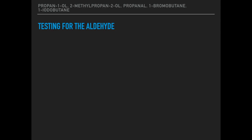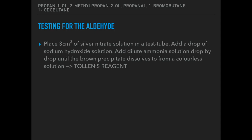The next test is for the aldehyde. The first thing you need to do is make the Tollens reagent. To make Tollens, add silver nitrate solution to a test tube — remember quantities aren't important. Add a drop of sodium hydroxide solution to the silver nitrate, which gives a brown precipitate. Dissolve this using dilute aqueous ammonia, adding it drop at a time until the brown precipitate dissolves to form a colourless solution. That is Tollens reagent.